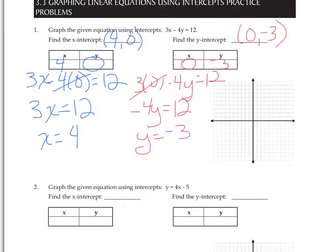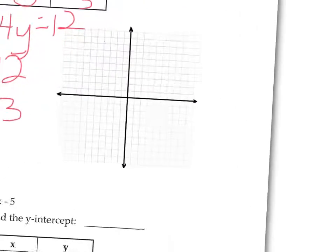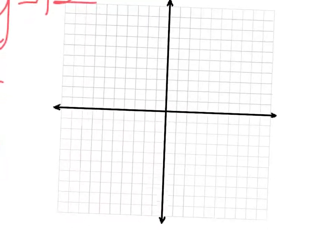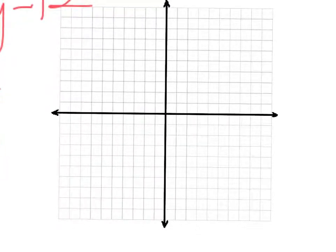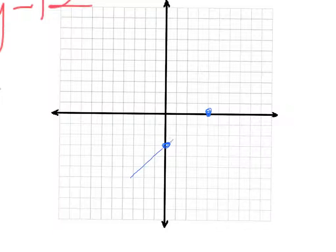Now we have both intercepts: (4, 0) and (0, -3). We're going to put them on the graph. The x-intercept is (4, 0), so we count over 4 and mark it right there on the x-axis. The y-intercept is (0, -3), so we count down to negative 3 and mark it on the y-axis. Then we connect the dots and make a line. That's how we graph using intercepts.